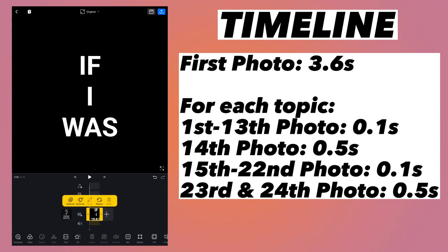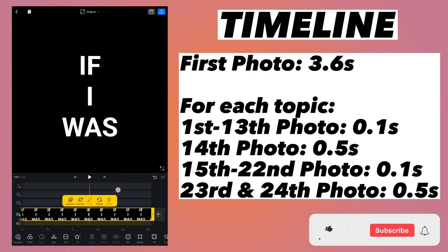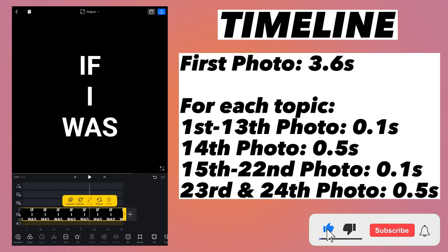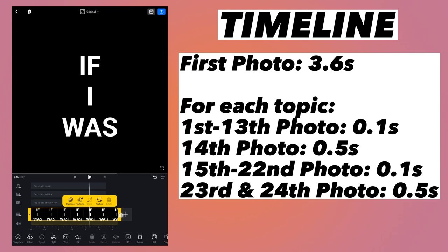Select the photo and drag the right-hand end towards the right. As you can see, the timing is increasing on the timeline. To see the duration of the photo, use two fingers to collapse the timeline, and then you should be able to see the timing of that photo. Make sure that it is exactly 3.6 seconds — now the duration is 3.6 for this photo.